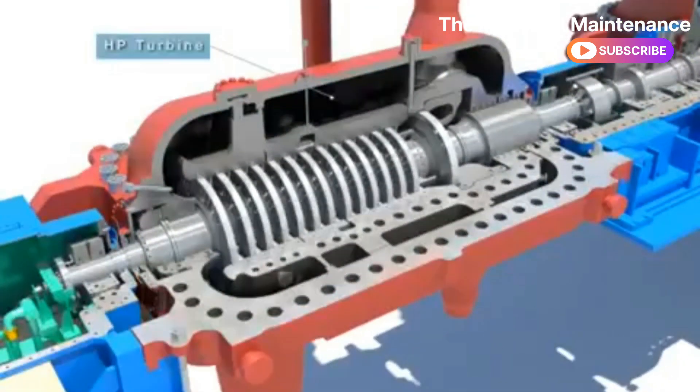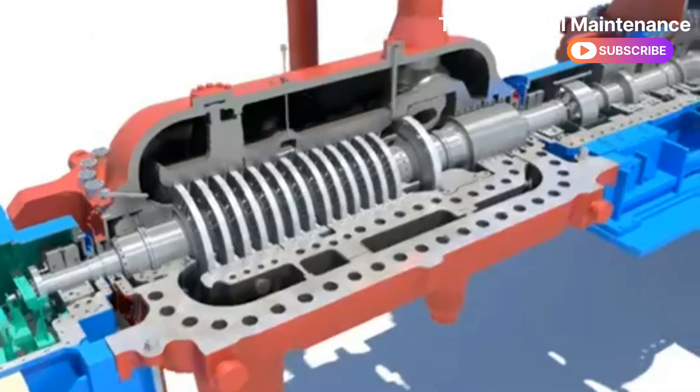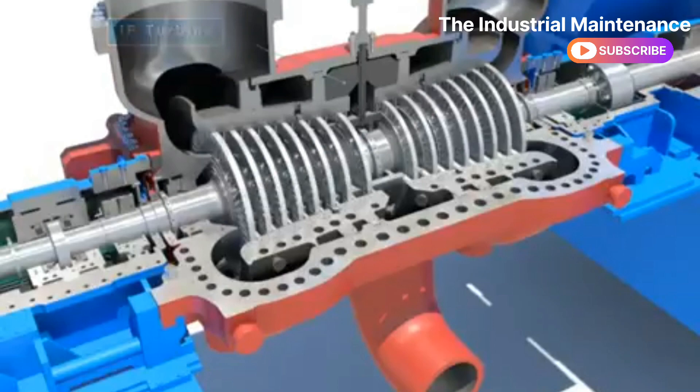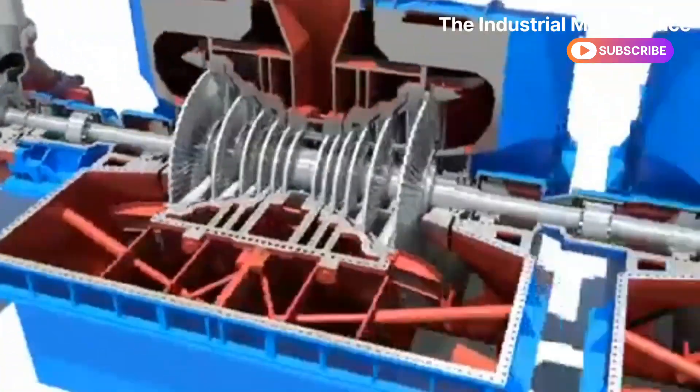The steam turbine is a reheat condensing turbine of the tandem compound type, which consists of HP turbine, IP turbine, and LP turbine.